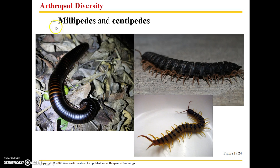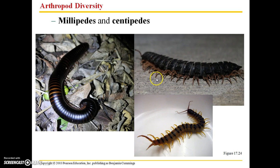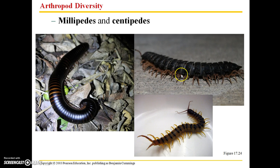Millie refers to thousands and centi refers to hundreds, so millipedes have more legs than centipedes. You can't always tell immediately by looking — sometimes you have to count the legs, as there are some intermediate body forms. This particular individual here is a millipede.